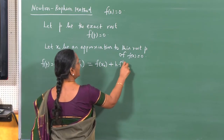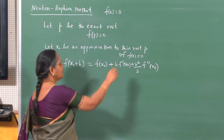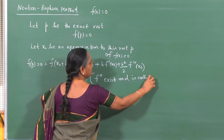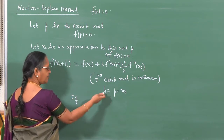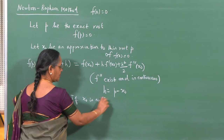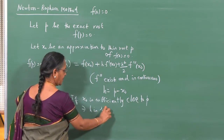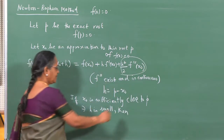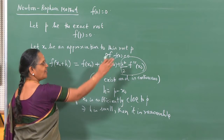So f(x₀ + h) = f(x₀) + h·f'(x₀) + (h²/2!)·f''(x₀) + ..., under the assumption that f'' exists and is continuous, and h = p − x₀. If x₀ is sufficiently close to p such that h is small, then it is reasonable to neglect the term which is of order h². We shall assume that h is very small and that terms of order h² can be neglected.